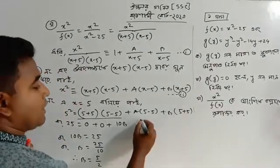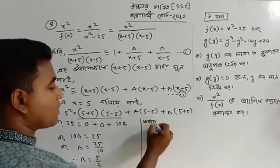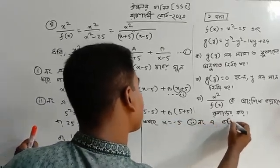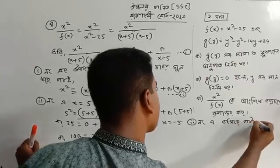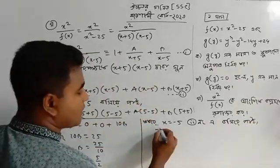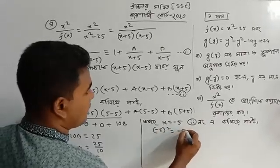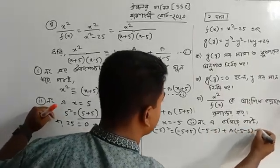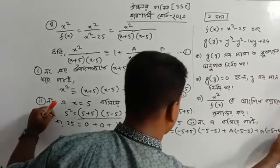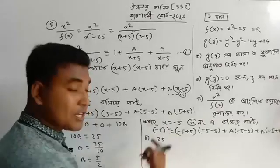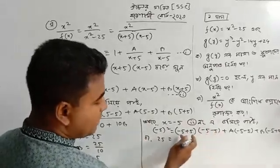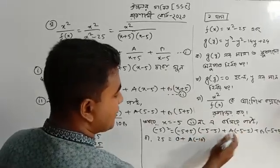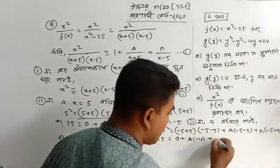B R is 5 by 2. Now we will see this is x equal to minus 5. Minus 5 whole square equal to minus 5 plus 5, into A into minus 5 minus 5, plus B into minus 5 plus 5. We have 25 equal to A into minus 10 plus B into 0.